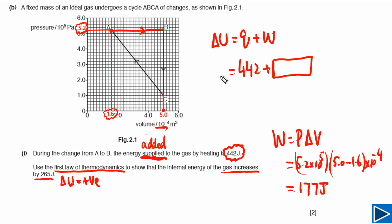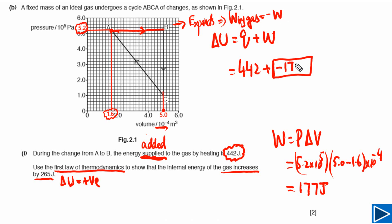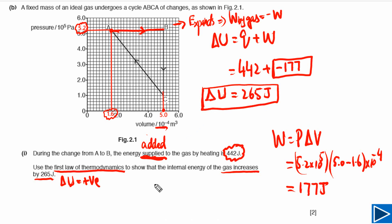This gives us the value of W. Since we go from A to B the volume is increasing, meaning the gas expands. When the gas expands, work is done by the gas, so work done is taken as negative. Plugging in the value of 177, and solving, our final answer is 265 joules for the change in internal energy. Since the sign is positive, this is an increase in internal energy, which is what the question asked us to show.